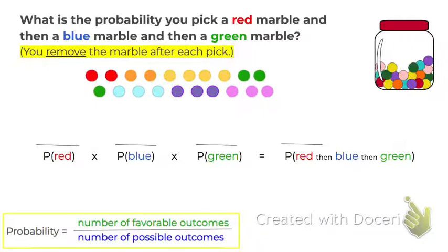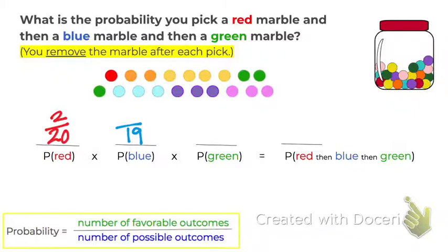So again, on our first pick for the red marble, there are 20 marbles and 2 of them are red. Let's say we picked that red marble — so the red marble is gone. The probability of picking a blue marble: there are now 19 marbles, so there are 19 possible outcomes, and 3 of them are blue. So it's 3 out of 19. Let's say we did pick that blue marble, and we remove it.